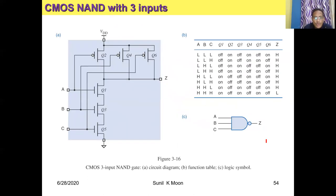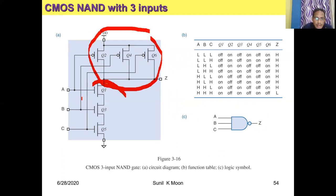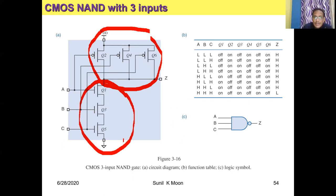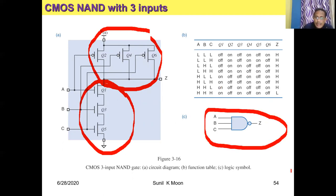For a three-input CMOS NOR gate, the concept is the same. Three PMOS transistors are connected in parallel and three NMOS transistors are connected in series — this is a parallel-series combination. The operation is the same as the previous two-input case. The symbol shown is for a three-input NAND gate.